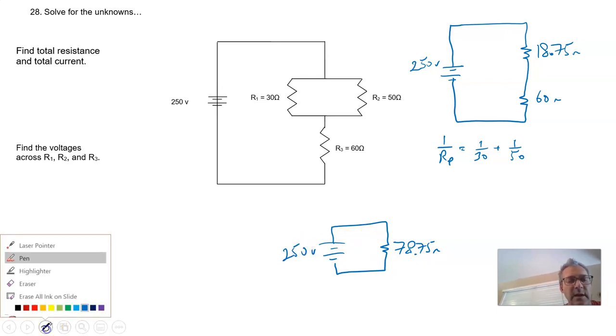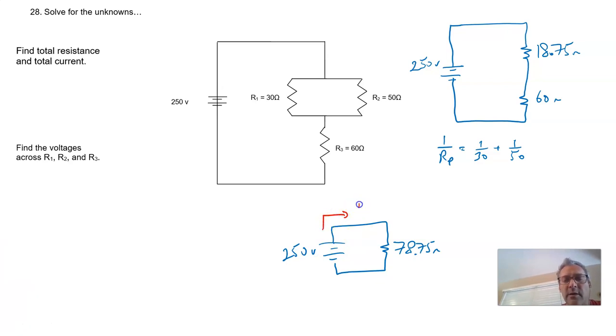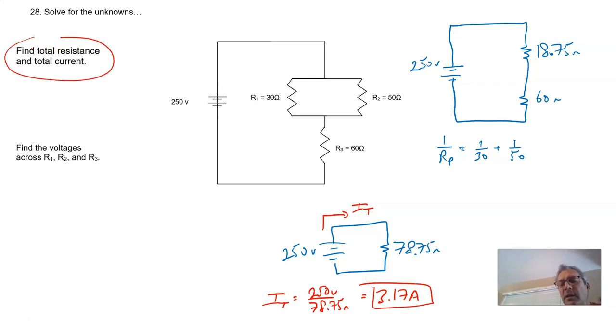This allows us to figure out the entire current now. The entire current flowing through the circuit. Ohm's law, total current is 250 volts divided by 78.75 ohms. And that gives us 250 divided by 78.75, 3.17 amps of current. All right. First answers are done. We figured out the total resistance and the total current in the circuit. Now let's start working backwards.